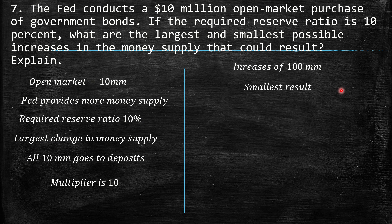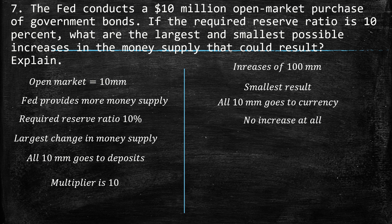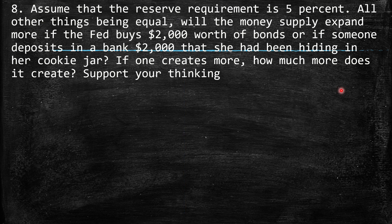The smallest result possible is that all $10 million goes directly to currency — it doesn't go to deposits and doesn't go to banks. So then there is no multiplier effect, meaning there is no increase in the money supply at all.